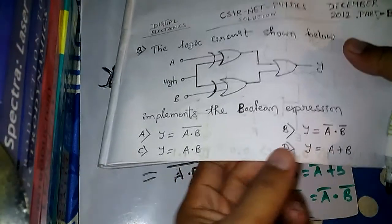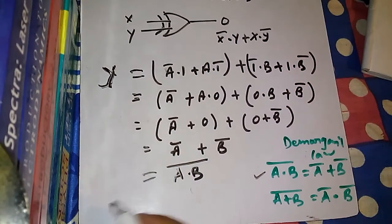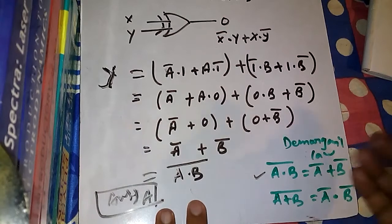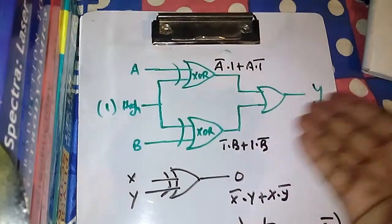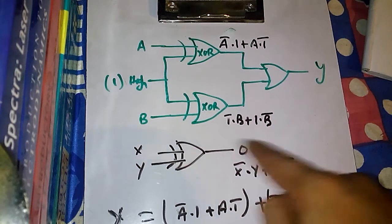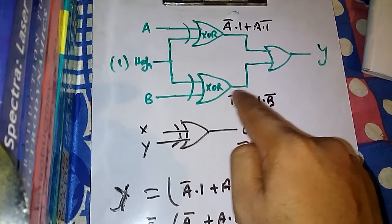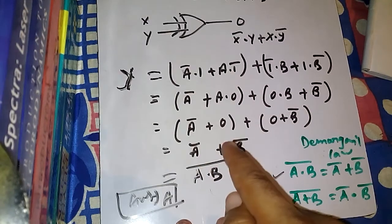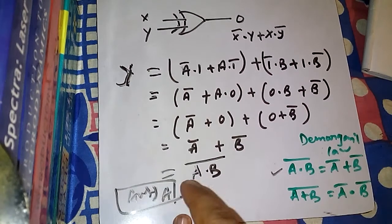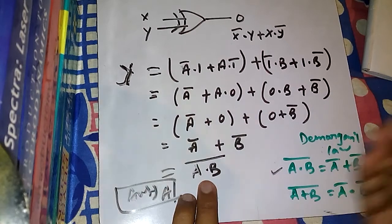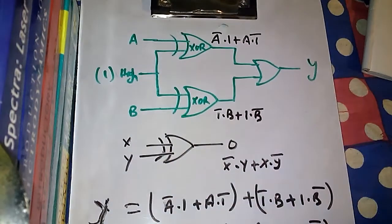So from here we see that this now matches with option A. Our answer is option A. To summarize: from the digital circuit we found the output of the first XOR gate, then the second XOR gate, these two outputs went into an OR gate, giving the circuit's output expression. After simplification and applying De Morgan's law, we arrived at A dot B bar, which matches option A. The boolean expression of option A is the same as the boolean expression for this digital circuit.